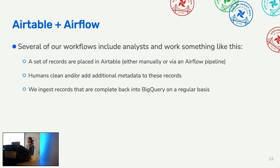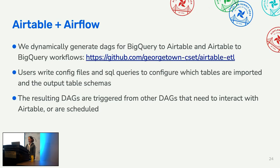Several of our workflows include human annotators — we're lucky to have university students who help with data annotation tasks. We place a set of records into Airtable either manually or through an Airflow pipeline, humans clean or add metadata to those records, and then we ingest the records back into BigQuery on a regular basis. We use dynamic DAG generation with separate scripts for BigQuery-to-Airtable and Airtable-to-BigQuery workflows, with config files specifying column renaming, exclusions, merge logic, and how new and old records should be reconciled.